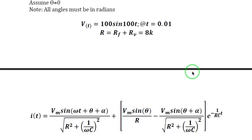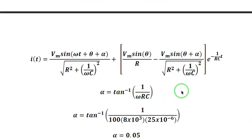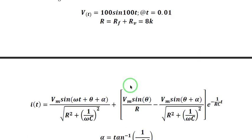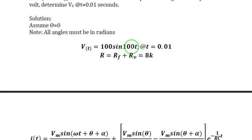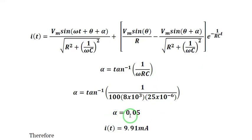From this equation, we are going to determine our alpha, which is 0.05, substituting all the values of omega, R, and C. Omega is 100 based on this given V(t), R is 8k, and C is 25 microfarad. So alpha is 0.05.